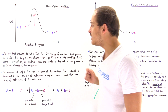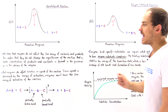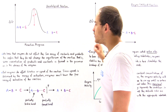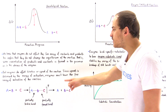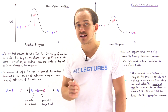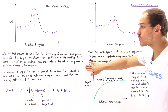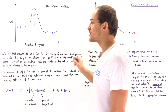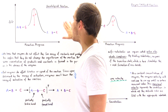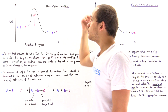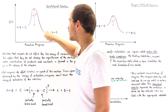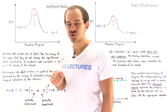Once again, enzymes do not affect the free energy of the reactants and products. This implies they will not change the equilibrium of the reaction — the same concentrations of products and reactants will be formed in the presence as in the absence of enzymes. When we add an enzyme, the energy values of the reactants and products will not actually change.